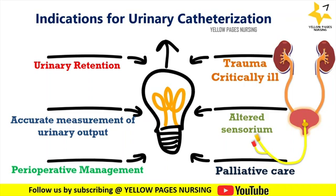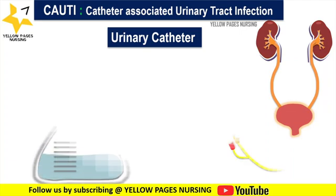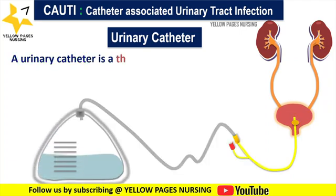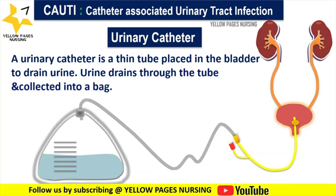What is a urinary catheter? A urinary catheter is a thin tube placed in the bladder to drain urine. Urine drains through the tube and gets collected into a bag. It is simply called a Foley catheter.